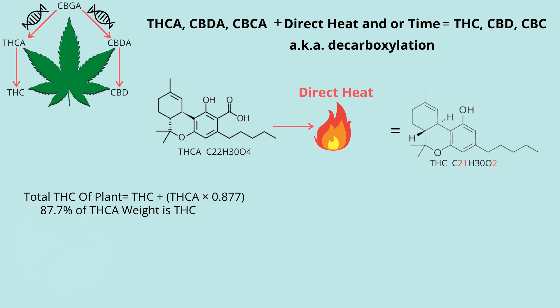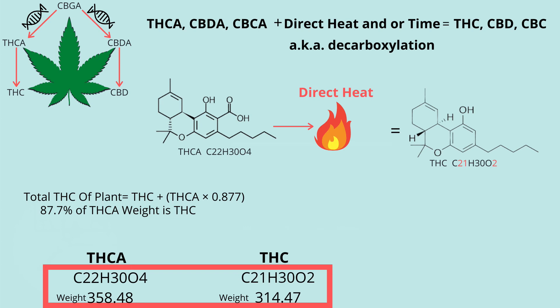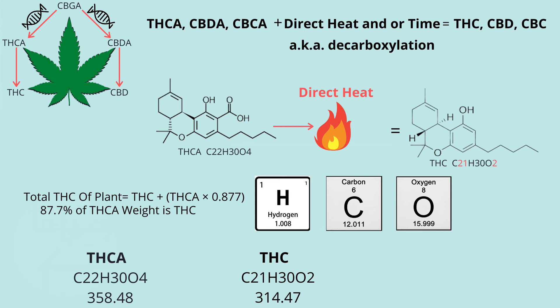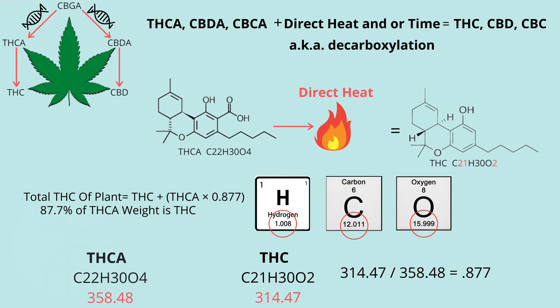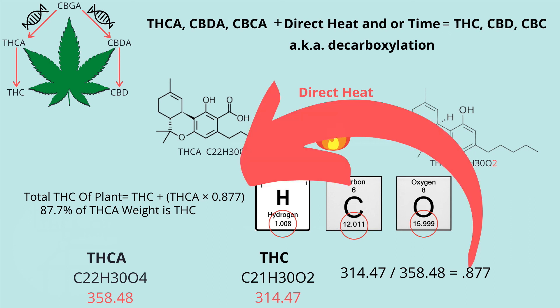A simple equation for this is that THCA is 87% THC. Let's take it one step further to find out why. It's all due to the molecular weight of the molecules THCA and THC. Looking at the periodic table, we can find the weight of each element, then multiply the weight of each element times the number that comes after it in the formula. For example, C22 is carbon at 12.011 multiplied by 22; H30 is hydrogen at 1.008 multiplied by 30; and O4 is oxygen at 15.99 multiplied by 4. If you do this for both THC and THCA, the numbers come out to 314.47 and 358.48. When you divide 314.47 by 358.48, you get 0.877, which relates back to what we said earlier and proves the equation true.